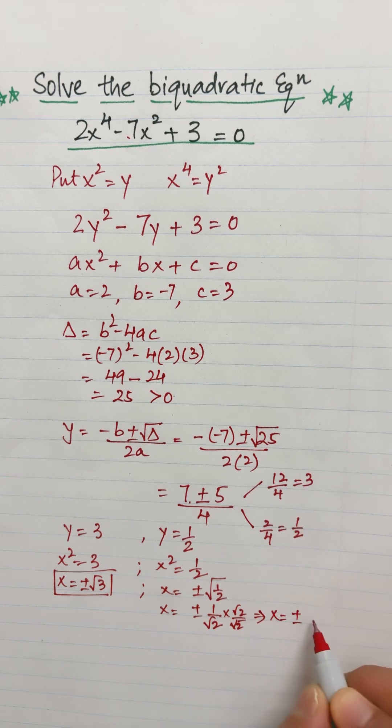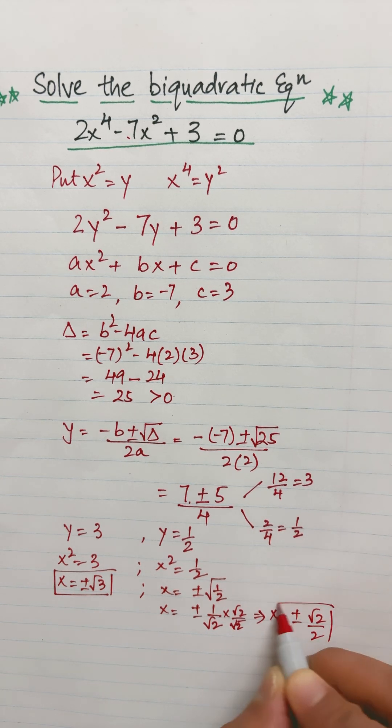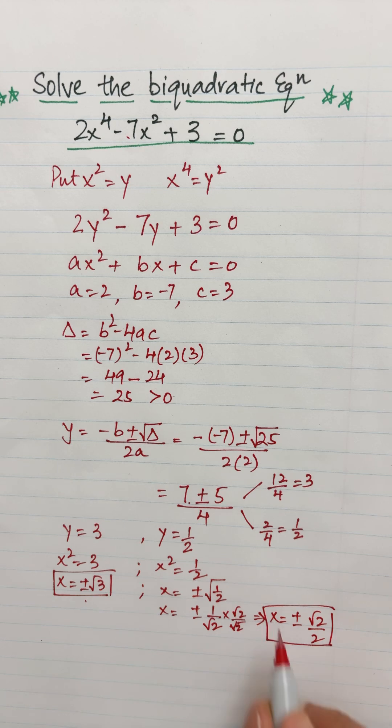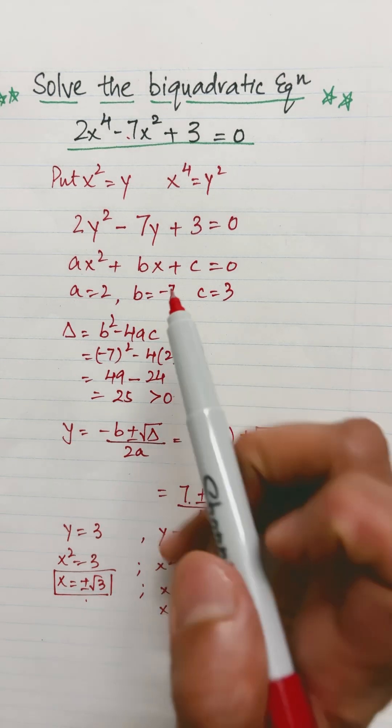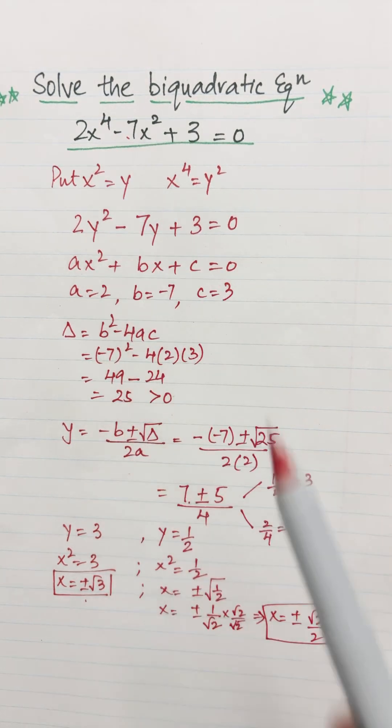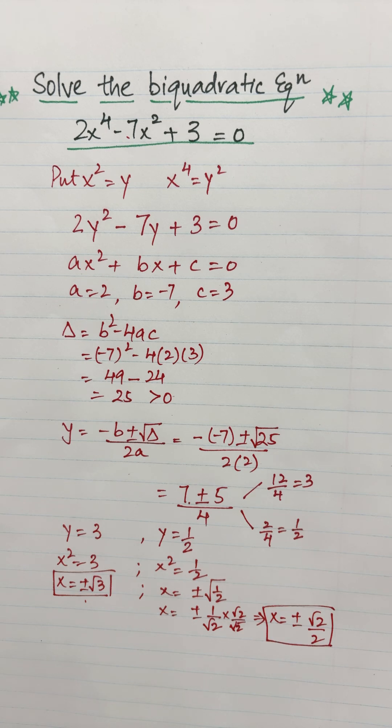So we have these four solutions because the equation was bi-quadratic. The degree was 4, so we will have 4 solutions. The degree will tell us how many solutions do we have for that quadratic equation.